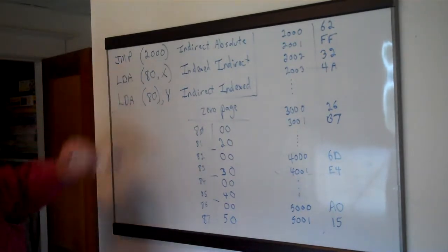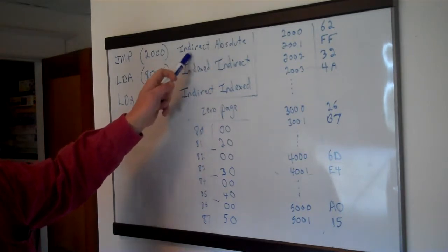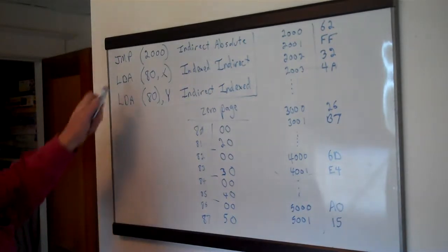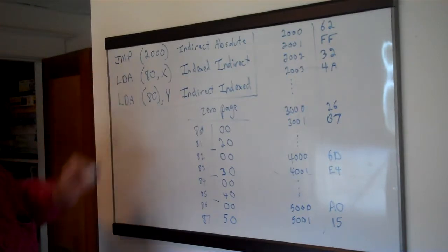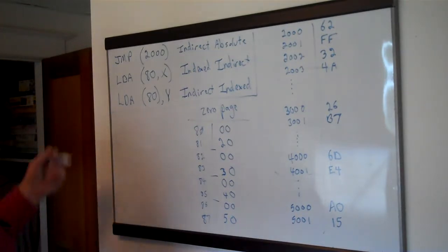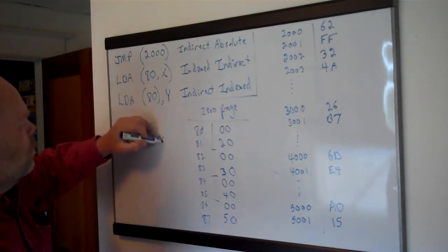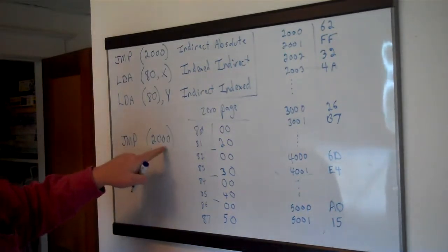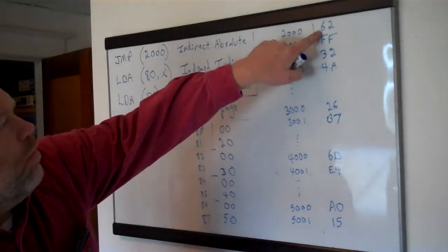To start with, the first one is sometimes called indirect, sometimes called indirect absolute or absolute indirect, depending on which book you're looking at. This is the one that only works with jump commands — jump is the only instruction that uses this method, and that's one reason you don't see it a lot. All these numbers are hexadecimal, by the way.